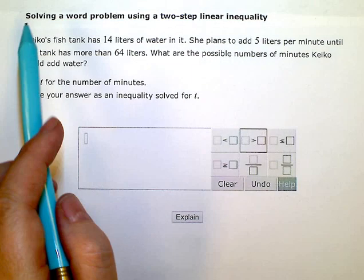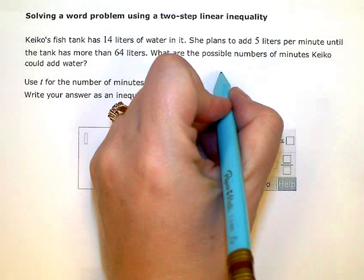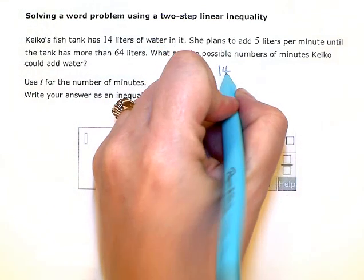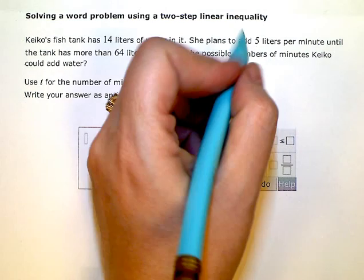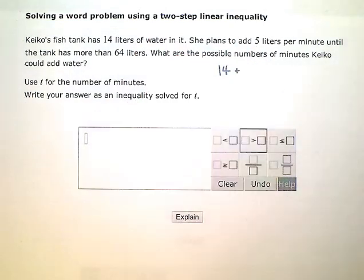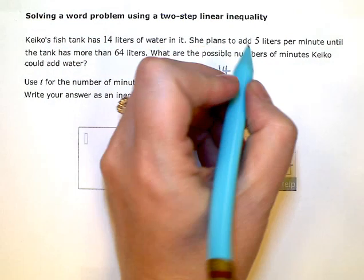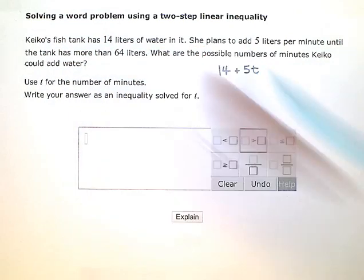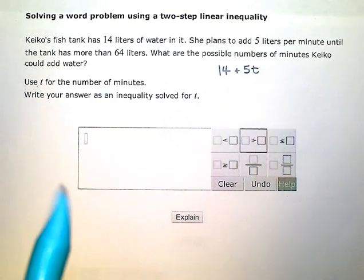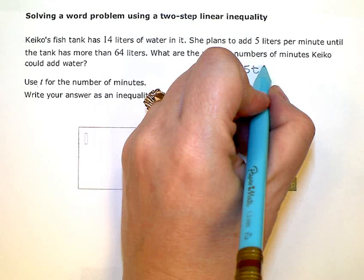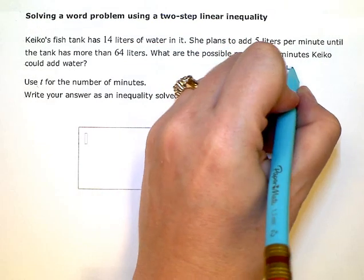So the fish tank has right now 14 liters of water in it. Let's write down 14. She plans to add 5 liters per minute. So 5 liters every minute, we're using T for time, the number of minutes, until the tank has more than, so greater than 64 liters.